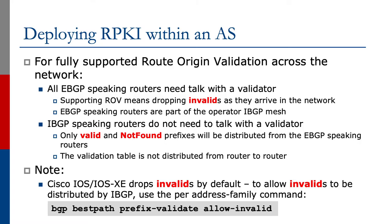Now let's look at some of the deployment situations and some of the challenges. For fully supported route origin validation across the network, all eBGP speaking routers need to talk with a validator. Supporting route origin validation means we are dropping invalids as they arrive in the network. eBGP speaking routers are part of the operator IBGP mesh, and do not need to talk to a validator because only the valid and not found prefixes will be distributed from the eBGP speaking routers. Note, the validation table is local to the router.